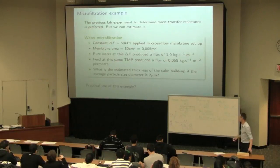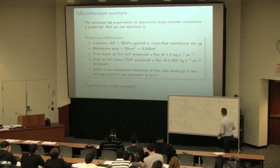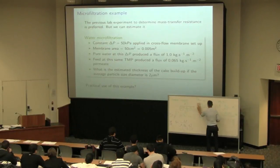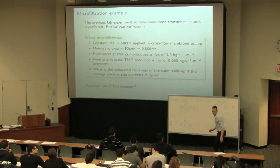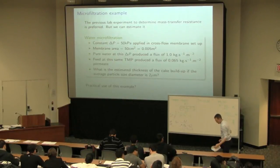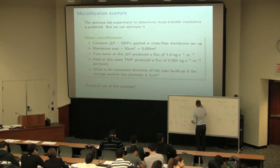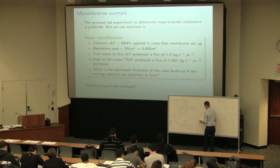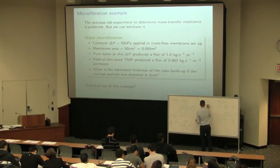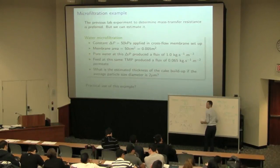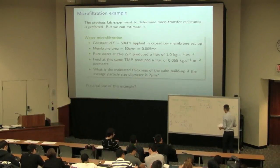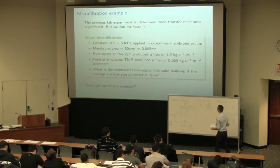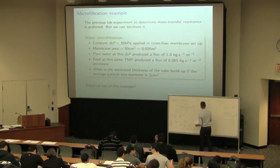Rather than the usual Rm, I'm going to estimate RmV. So the pure water test, we can write this equation here. Ignoring the cake resistance, Jv is equal to the pressure drop divided by nu times RmV dash.